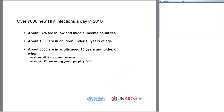Around the world, there were about 7,000 new HIV infections per day in 2010, with about 97% of those in low and middle income countries and about 1,000 in children 15 years or younger. Of the approximately 6,000 new infections in adults, about 48% were among women and about 42% were among young people — a large percentage in the 15 to 24 age cohort — which is something we see in the United States as well.